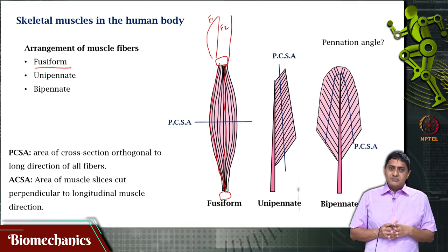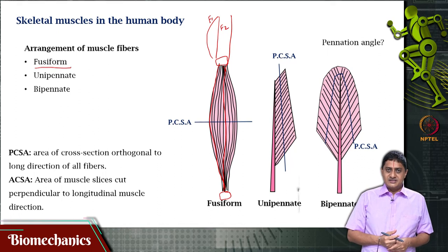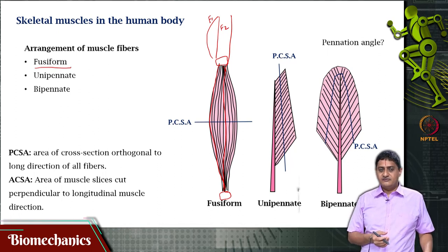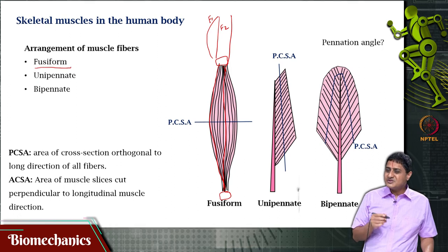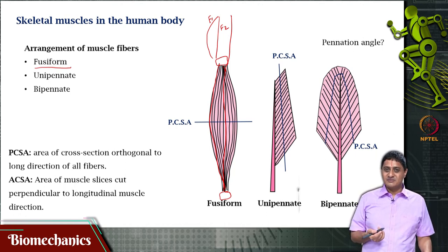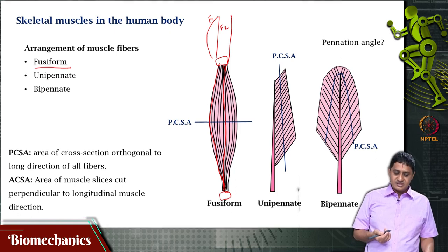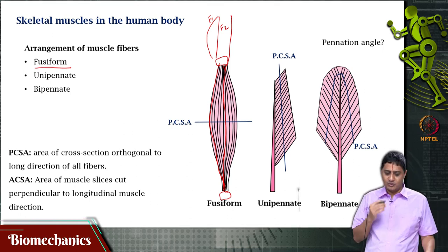An important measure — or determinant — of the force produced by a muscle is its cross-sectional area. But when you say cross-sectional area, it is not immediately clear which cross-sectional area you are talking about. There are two types of cross-sectional area depending on the type of muscle. Let us look at this in a bit more detail.